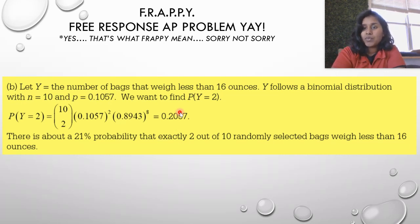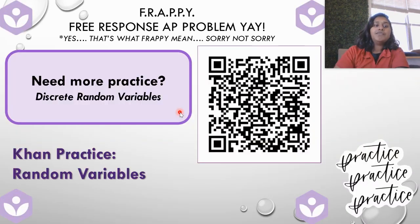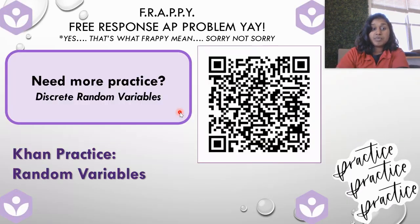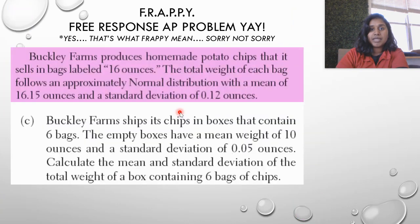Multiply all that out and you get 0.2057. There's a 21% probability or chance that exactly two out of ten randomly selected bags weigh less than 16 ounces. This is a really easy question, but it's just about remembering how to set up a binomial distribution and how to recognize it. If you need more practice on discrete random variables, please go here.